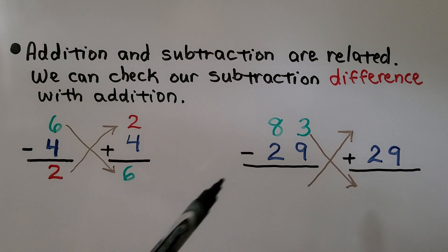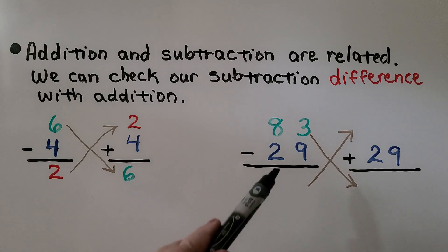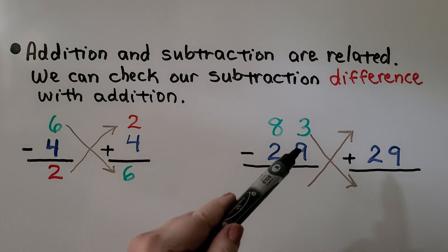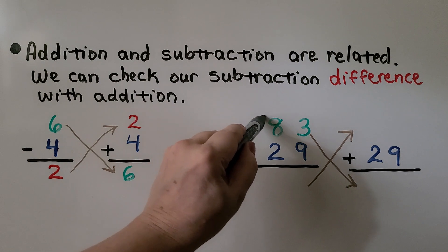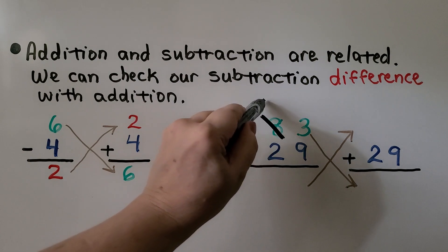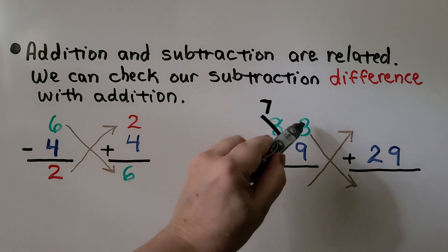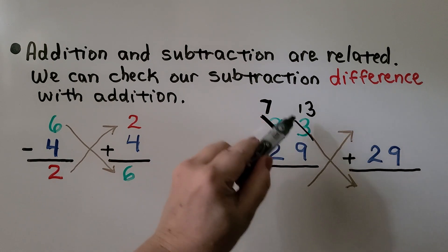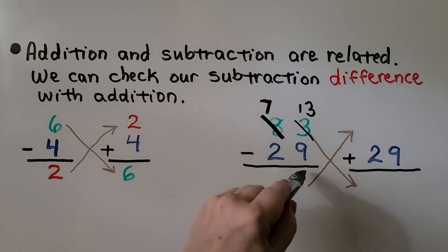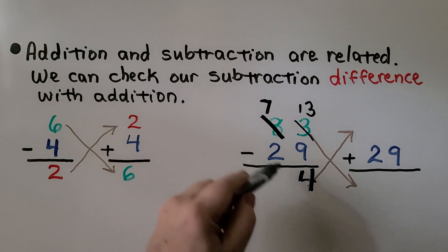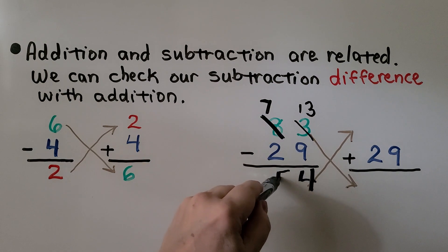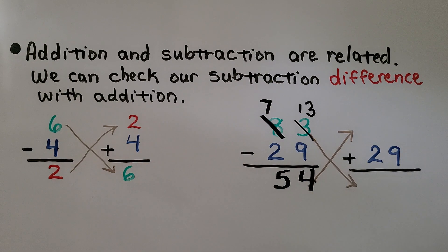Let's try it with 83 minus 29. We look at the ones place and see we don't have enough ones to take nine away, so we regroup. That becomes seven tens and thirteen ones. Thirteen minus nine is equal to four. Seven minus two is five. That's 54.